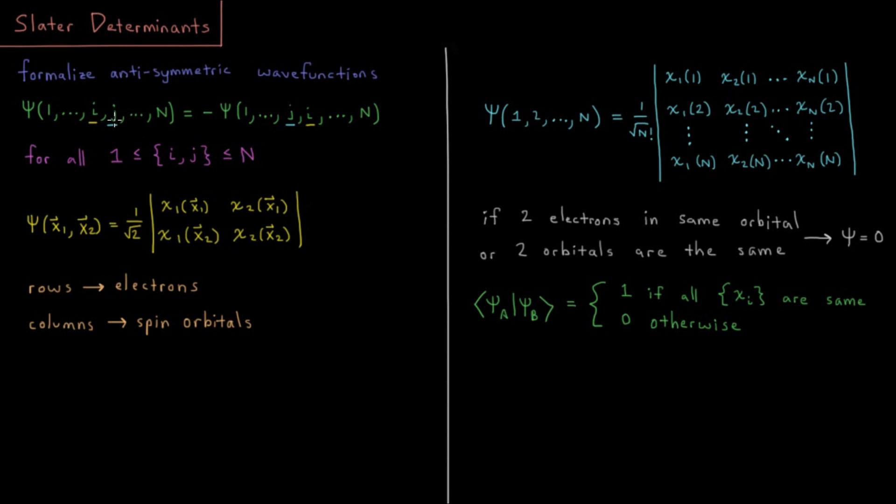A way we can indicate that very quickly is to use a Slater determinant. For the two-electron example, we can write the wave function of two electrons, x1 and x2.